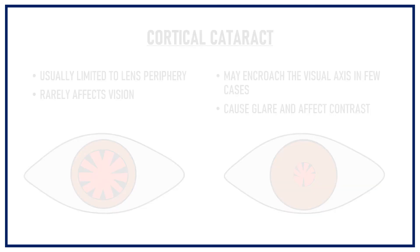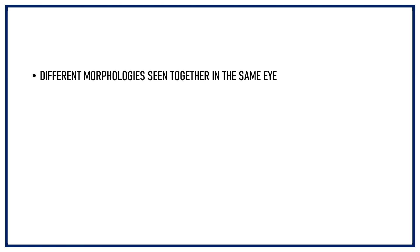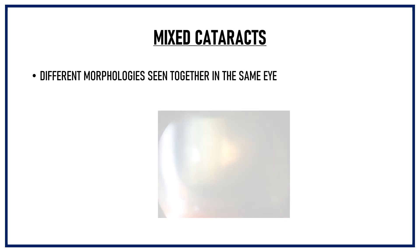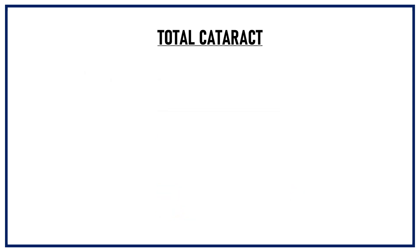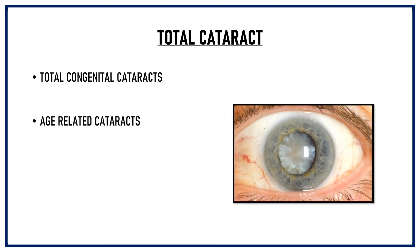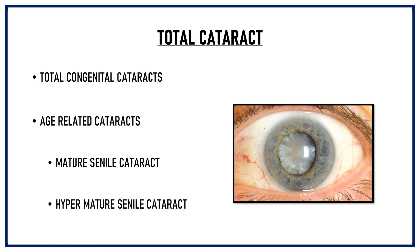These cataracts can be seen in isolation, but in many cases different morphologies of cataract are seen together in the same eye. For example, a patient of senile cataract can have a nuclear cataract with a cortical cataract and even a posterior subcapsular cataract — these are known as mixed cataracts. Like you can see in this picture where the lens nucleus is opacified and there is also a posterior polar cataract. Total cataract is when all the lens fibers are opacified. Some children are born with total congenital cataracts. In age-related cataracts, it can be a mature senile cataract or a hypermature senile cataract.